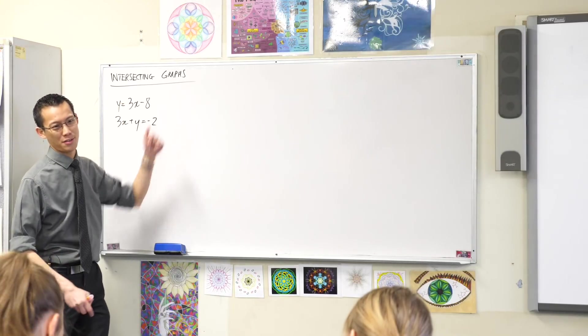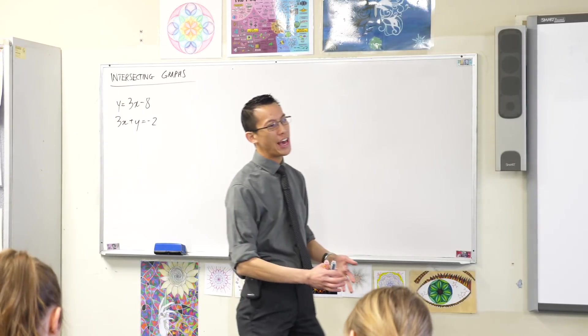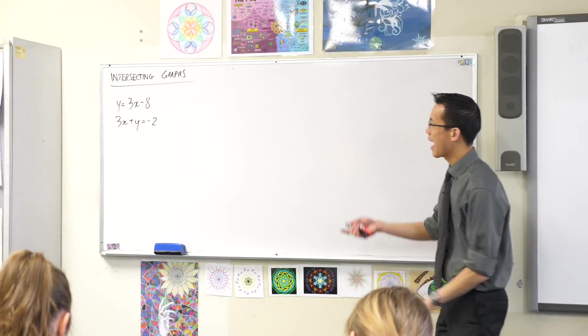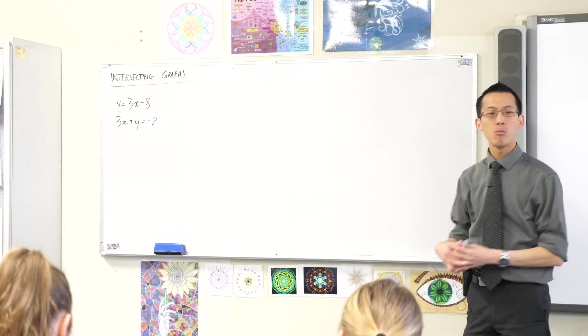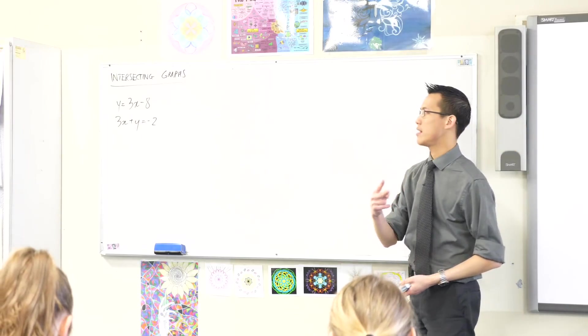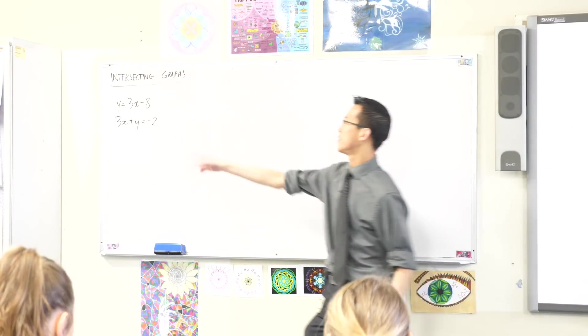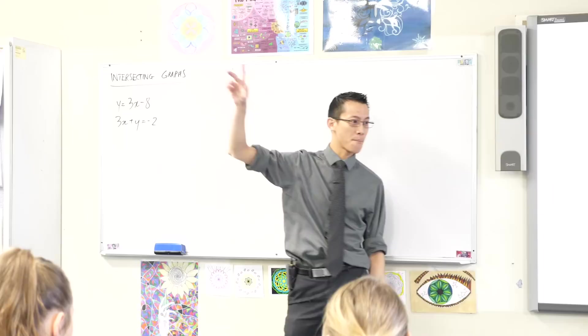When you get a pair of equations, what they can represent is a pair of lines and often these lines will intersect, they'll meet somewhere, and we can find, we've got at least two ways of finding where is it that the two graphs actually meet.